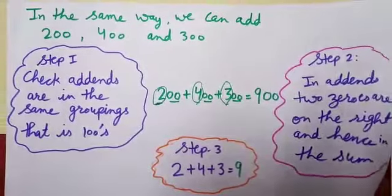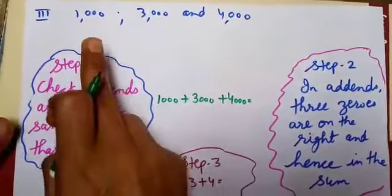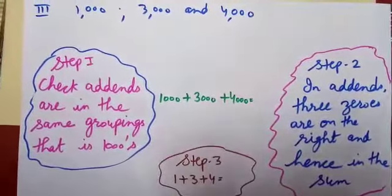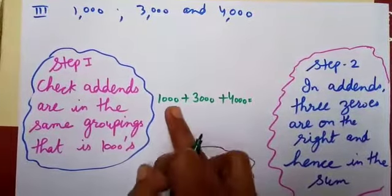Let us take another example. If I want to add 1000, 3000, and 4000, first step: I will check the addends are in the same grouping, that is 1000.